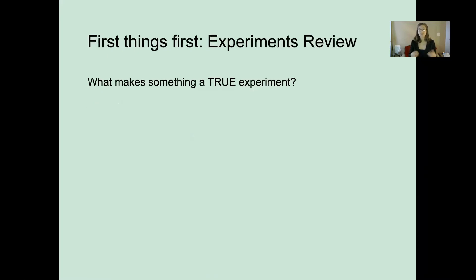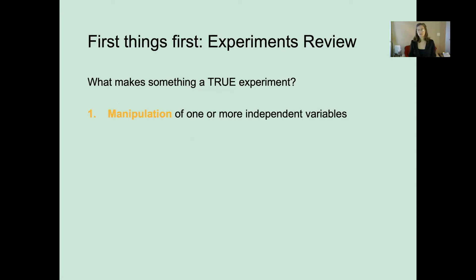To get started, let's review experiments. A true experiment has manipulation of an independent variable, or even multiple independent variables. An experimenter has control over levels of a variable — we actively go in and adjust or mess with these levels instead of just measuring stuff that's naturally occurring.